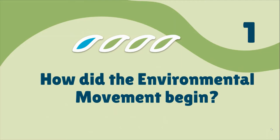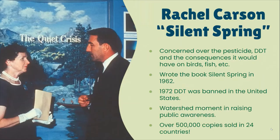How did the environmental movement begin? There are two really big events to mark as the beginning. One is in the 1960s: Rachel Carson wrote a book called Silent Spring in 1962 and is considered the beginning of the modern environmental movement. Just as The Jungle had major impacts during the Progressive Era, Silent Spring was one of those books with a massive impact. She was primarily concerned over a pesticide called DDT and the consequences it would bring to birds and fish.